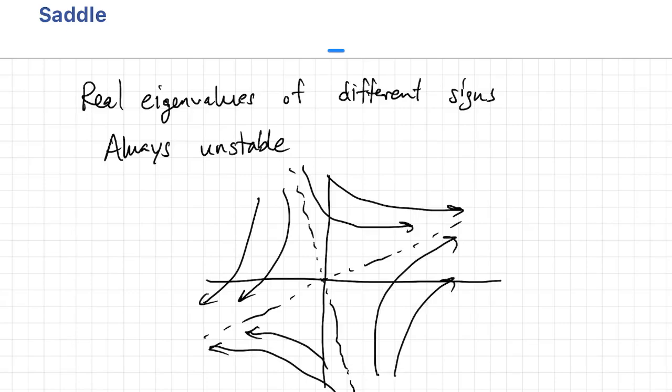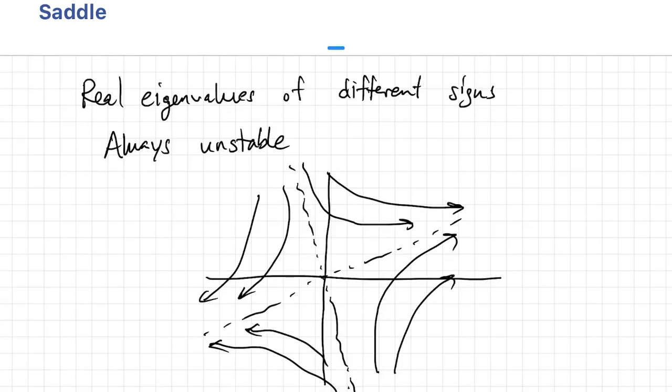If you happen to start exactly on the inward trajectory, you'll go all the way into the origin. If you start exactly on the outward trajectory, you'll go linearly away from the origin.